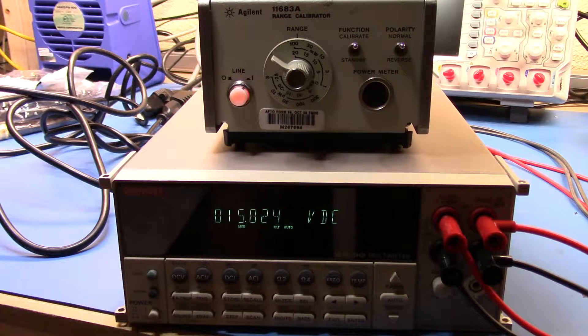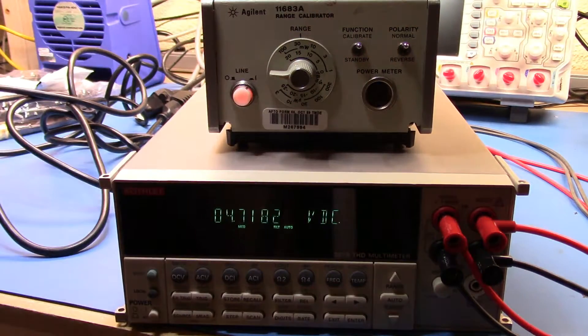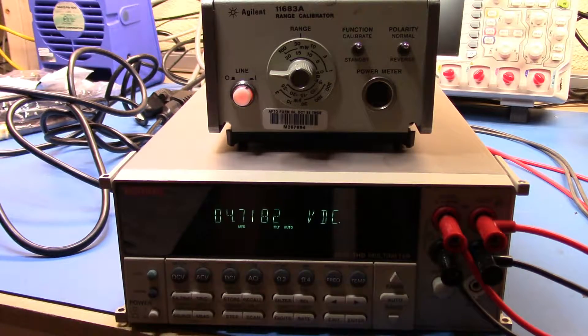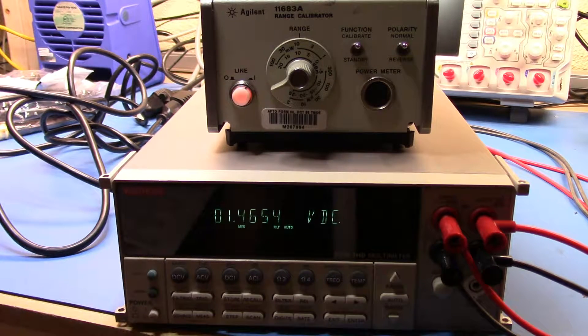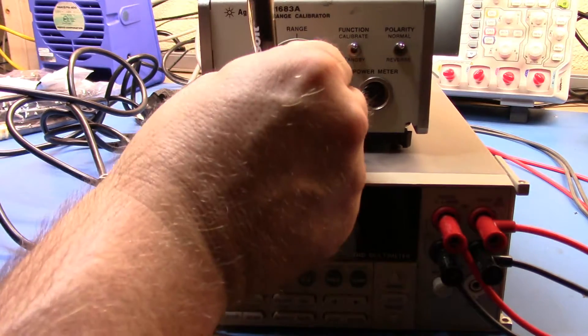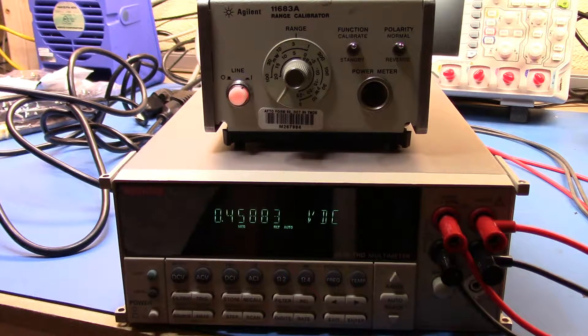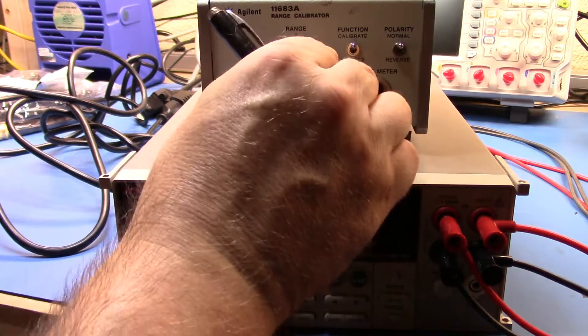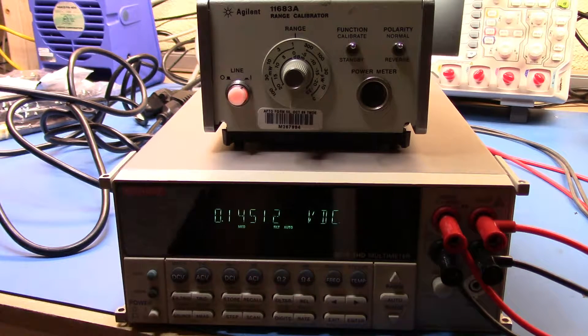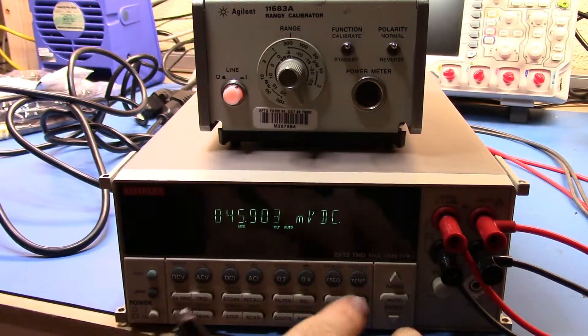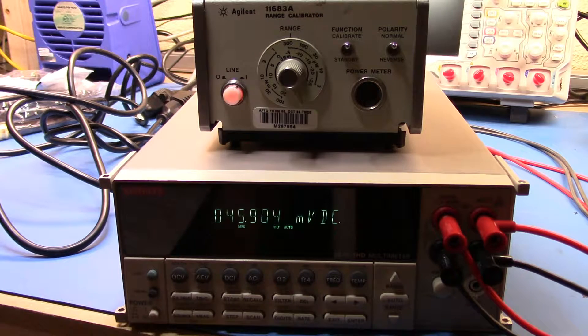So let's go back up to the top and we'll just put the range on auto and then we'll start recording some numbers. Okay, 15.824 volts, 4.7182, 1.4654, 158.83 millivolts, 145.12 millivolts, and 45.903.